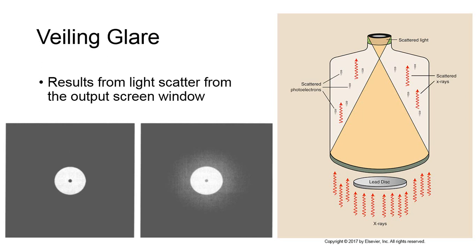We can test for this by placing a simple lead disk in the fluoroscopic image with a hole in the center. In the fluoroscopic image on the right, we see the hazy appearance produced from light scatter within the image intensifier.